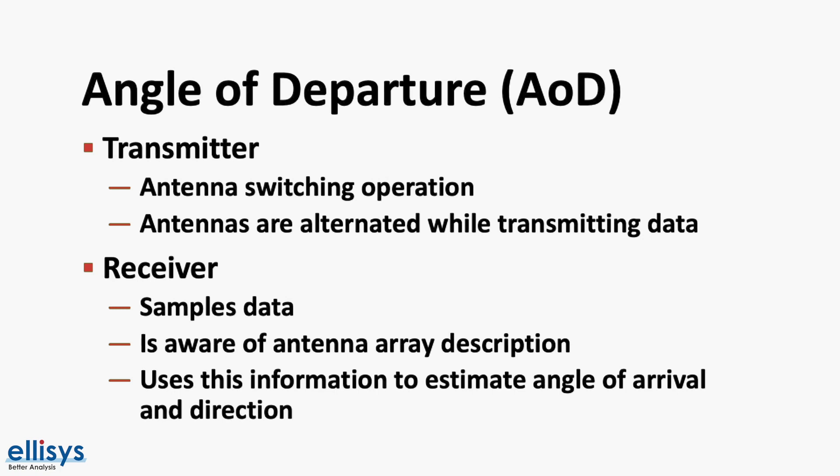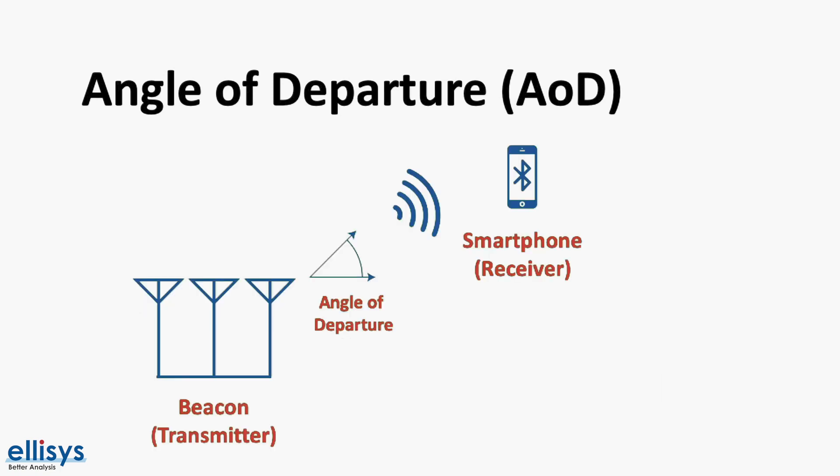As mentioned before, angle of departure is primarily used for indoor positioning systems. For example, a transmitter could be a fixed locator device that sends a signal received by a smartphone. The smartphone could then determine the direction of the received signal from the angle of departure data, and translate that to a location on a map displayed in a specific smartphone app.